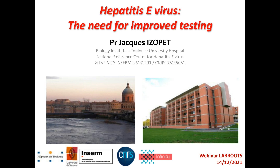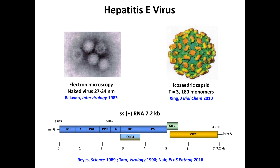Thank you. First of all, I want to thank Diasorin for organizing this seminar. Florence and myself are very happy to share with you recent advances on hepatitis E virus, particularly in the field of serologic diagnosis with a new automated system launched by Diasorin. Hepatitis E virus is a small naked virus, 27 to 34 nanometers. The capsid is icosahedral and the genome is a single-stranded positive RNA of 7.2 kilobases with three open reading frames — ORF1, ORF2, and ORF3. There is a fourth ORF overlapping ORF1 for certain strains belonging to genotype 1.